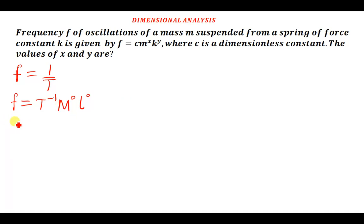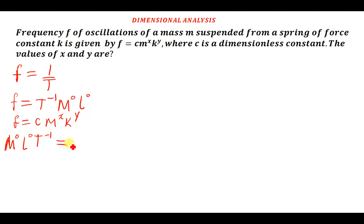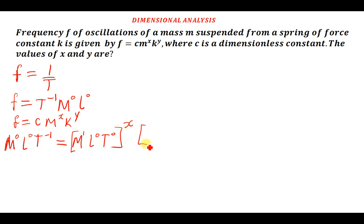The formula is f equals c times m to the power x and k to the power y. On the left side, frequency has dimensions M to the power zero, L to the power zero, T to the power negative one. I'm going to ignore the constant c because it's dimensionless. For mass m raised to the power x, the dimension formula for mass is simply M to the power one, L to the power zero, T to the power zero — all raised to the power x.